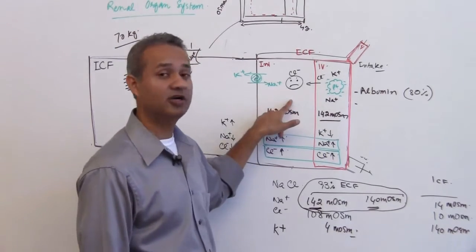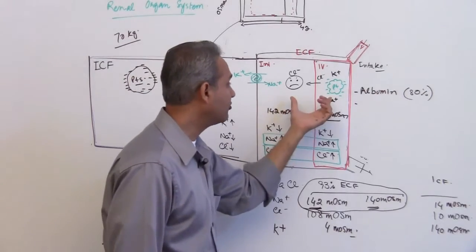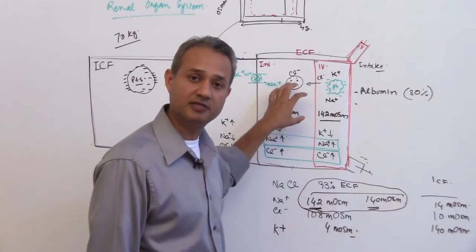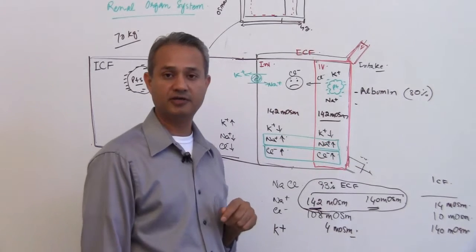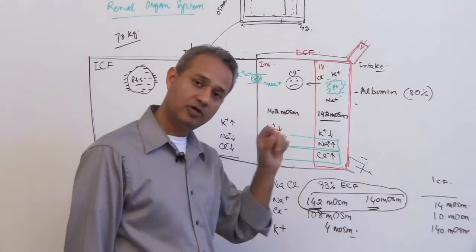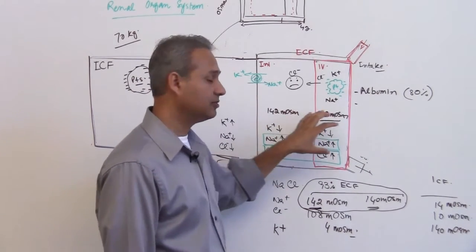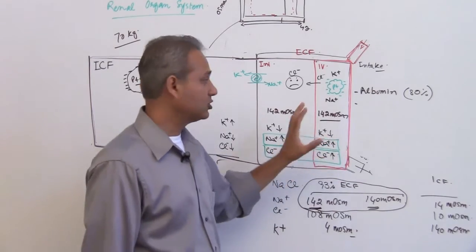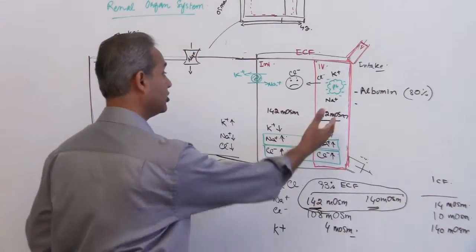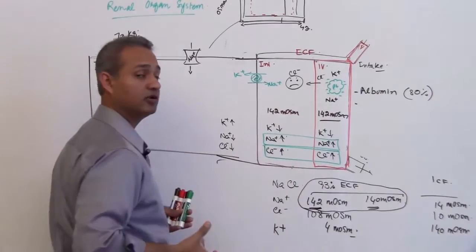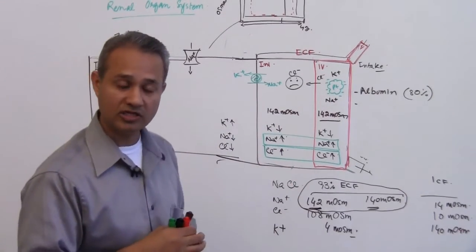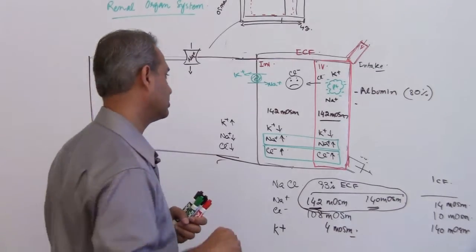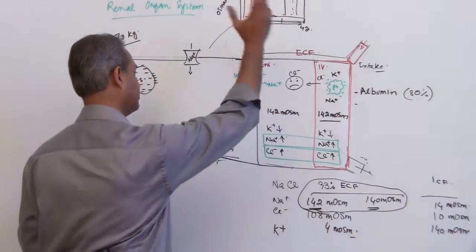If proteins could go into the interstitium, and if the amount of protein were equal in the intravascular and interstitial spaces, there would be no Donnan effect, and the amount of sodium in the interstitium and intravascular system would be the same. Proteins do not come out into the interstitium because they are large molecules that cannot cross the capillary membrane; they only appear in trace values and are taken back.